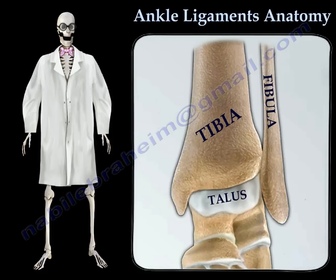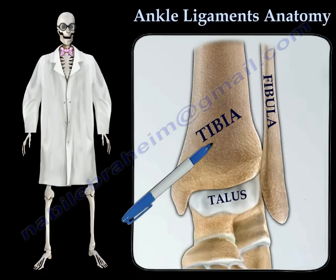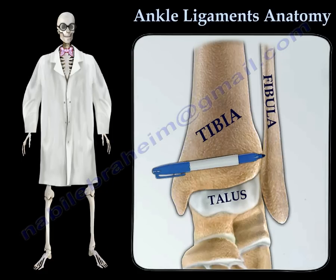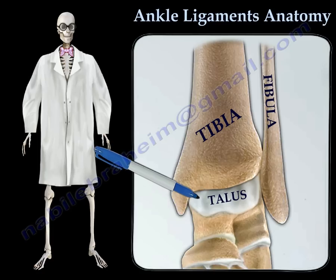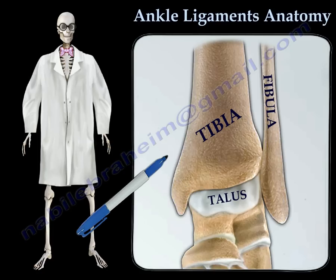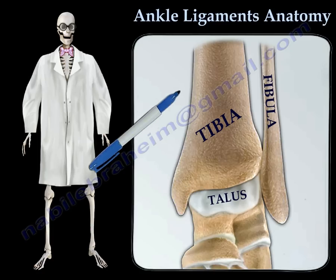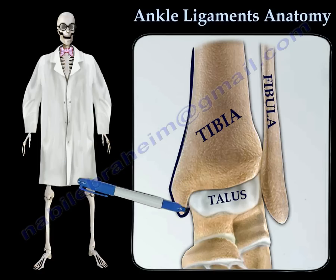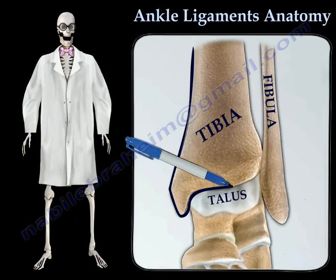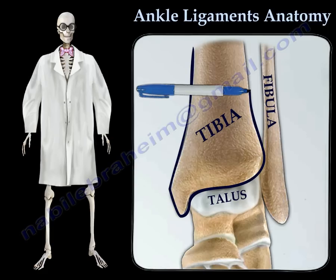The ankle joint is made up of three bones: the tibia, the fibula, and the talus. The tibia is the major bone of the lower leg, which bears the majority of the body's weight.